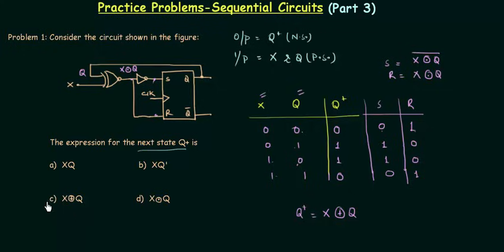So simply option C is correct. Q+, the next state, is X XOR Q. So this is how you have to approach whenever you have to solve for the next state.